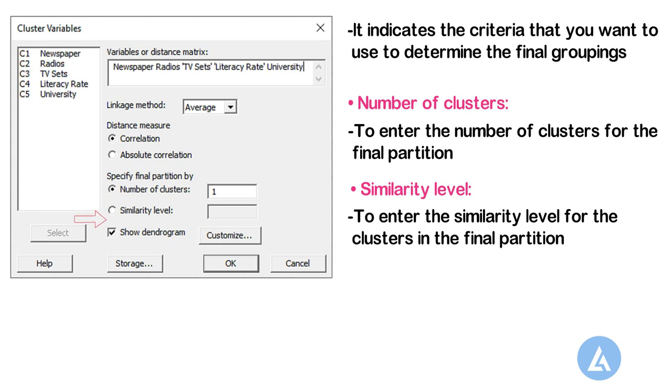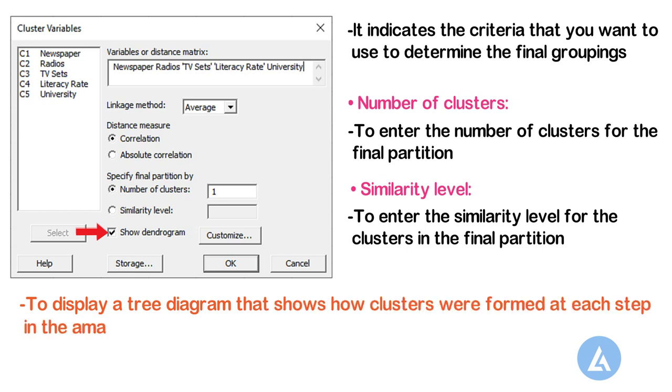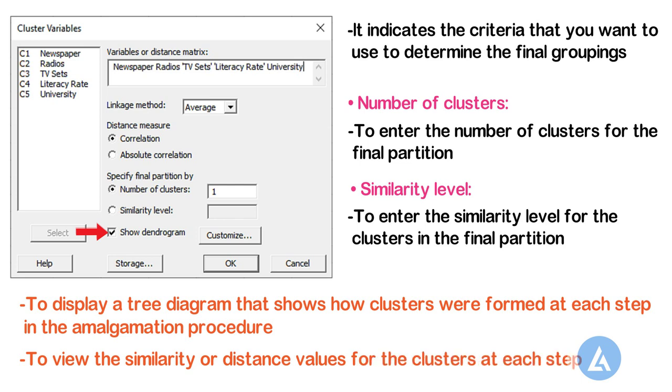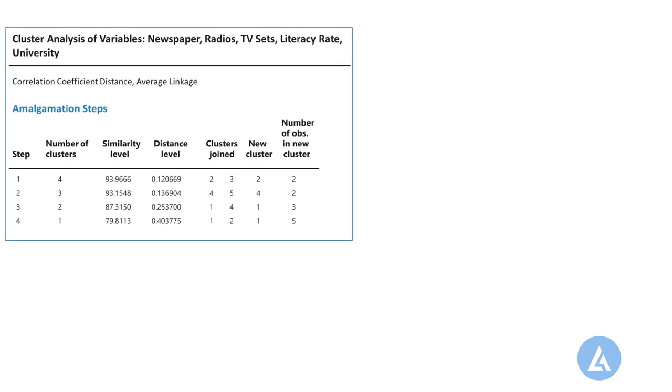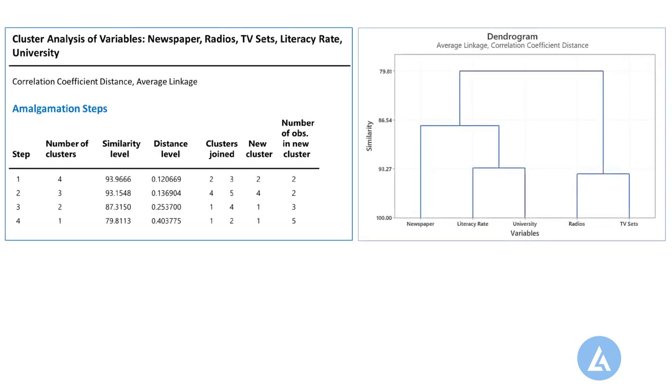Select Show Dendrogram. Select this option to display a tree diagram that shows how clusters were formed at each step in the amalgamation procedure. The dendrogram allows you to view the similarity or distance values for the clusters at each step. And click OK in each dialog box to get the results. We will get the results of an analysis in the session window and graph window.